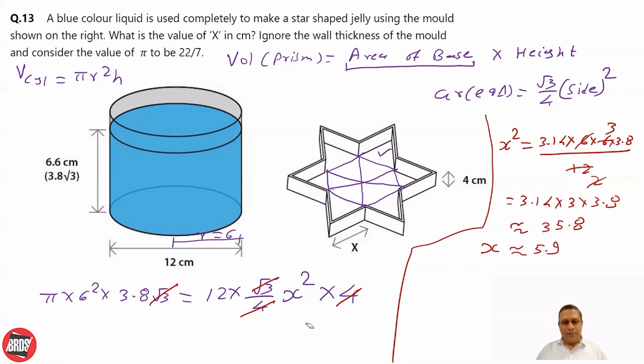That's the answer. In answer key, the range given was 5.9 to 6.1. So yes, this lies in that range. The value of X is 5.9.